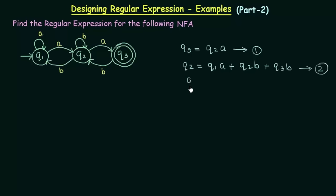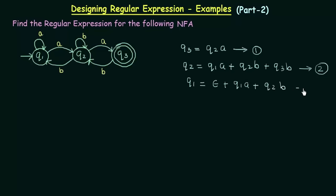Now let's do the same thing for state Q1. The incoming transitions to Q1 include one from nowhere, which is called epsilon, plus a self-loop from Q1 with input A, plus an incoming transition from Q2 with input B. So Q1 = ε + Q1A + Q2B. This is equation number 3.